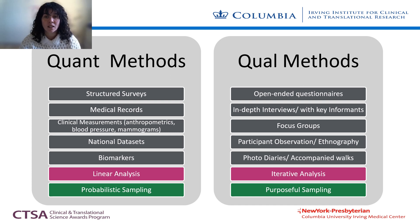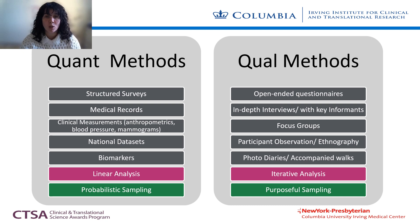Second, quantitative data collection usually occurs separately and before data analysis. For example, epidemiologists may standardize a survey and analyze the results once all data is received. In contrast, qualitative data collection tends to be more iterative — qualitative researchers may refine their interview guide and analyze data as they collect it to help assess saturation, which is when no new themes emerge from interviewing additional participants. Third, quantitative data collection tends to be generated from a probabilistic sample with the goal of being generalizable, whereas qualitative data collection follows a purposeful sampling strategy to gain in-depth information from predefined groups.